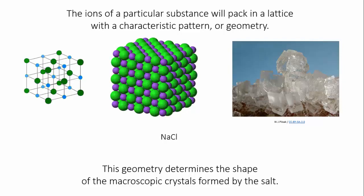For instance, sodium chloride packs into a lattice called simple cubic, and when you grow crystals of table salt, you'll see that the predominant shape is a cube.